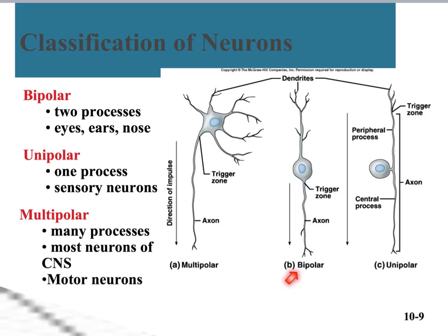Bipolar neurons — bi for two — have two branches or processes coming off of the cell body. These are less common and are primarily found in the eyes, ears, and nose. Then unipolar neurons — uni for one — have one process coming off of the cell body. Those are also less common and are your sensory neurons found in the peripheral nervous system.